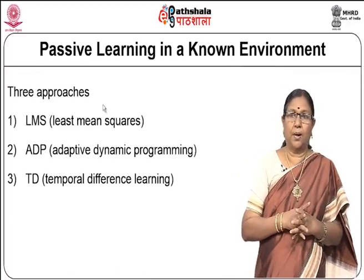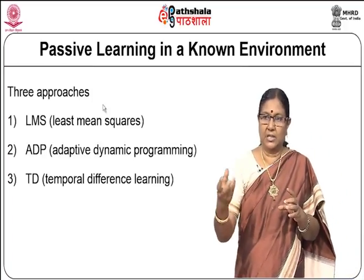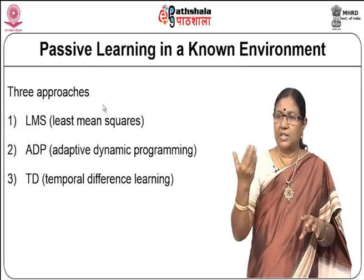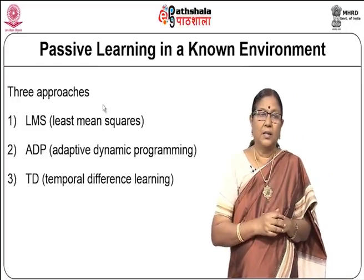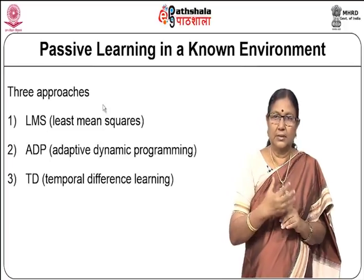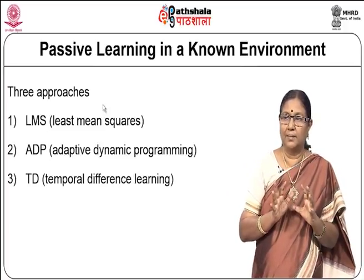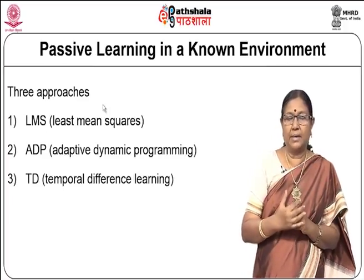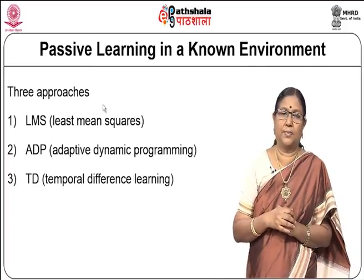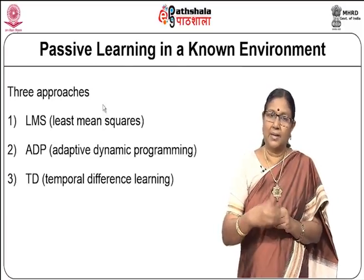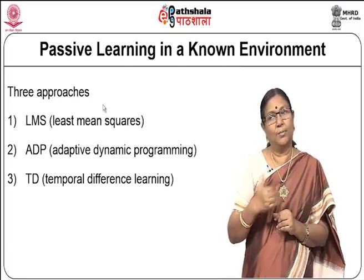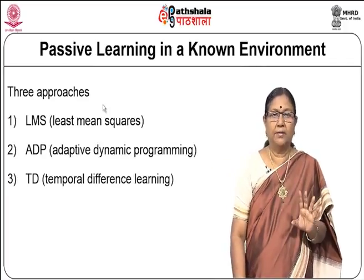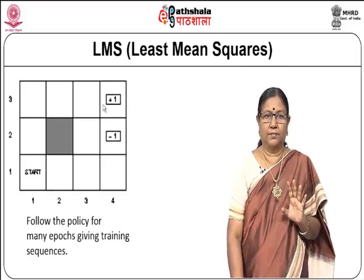To solve this problem — finding the best path from the start state to the terminal state to maximize reward — there are three approaches: least mean squares, adaptive dynamic programming, and temporal difference learning. We will go into temporal difference learning and Q-learning in more detail in the next two modules, but here we talk about the three approaches in general.